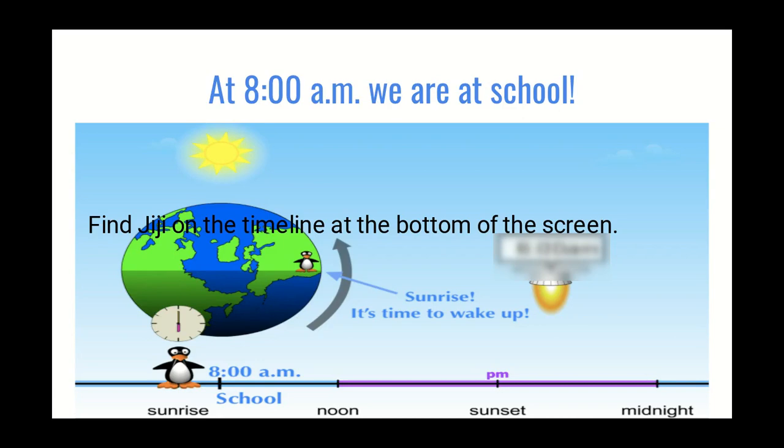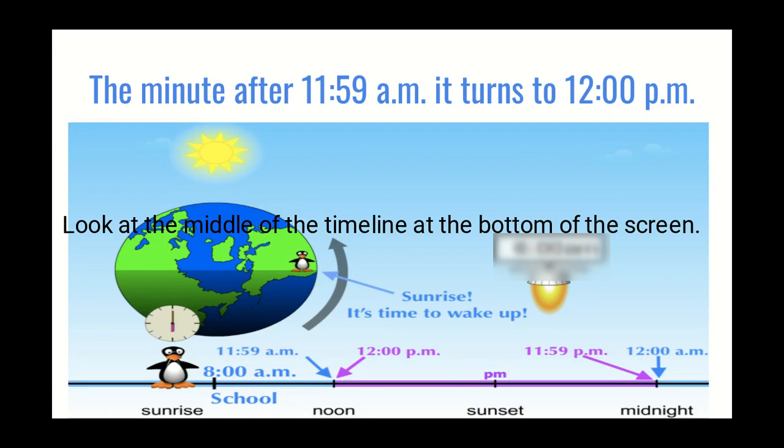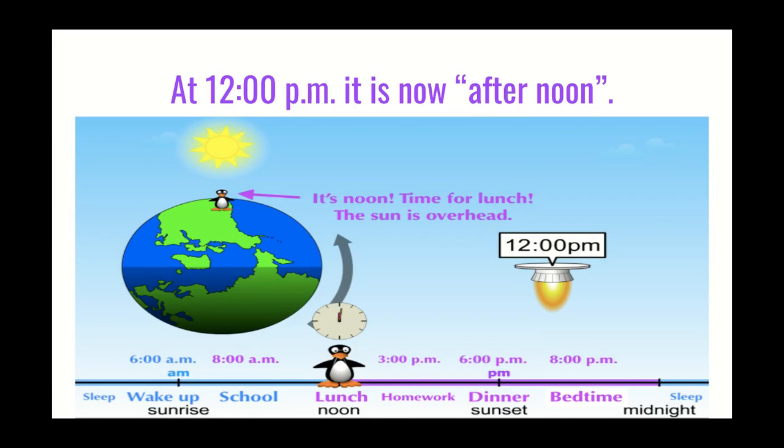At 11:59, that's the minute before it turns to 12 o'clock. You can see in about the middle of your screen it says 11:59 a.m., and then it says 12 o'clock p.m. The blue and the purple arrows are pointing at noon. You can see Gigi's there, and the sun is right over her head — that's like when we're finished with lunch, lining up on the playground, and the sun is right overhead. That's 12 p.m., and it's officially after noon because a couple of seconds have passed.